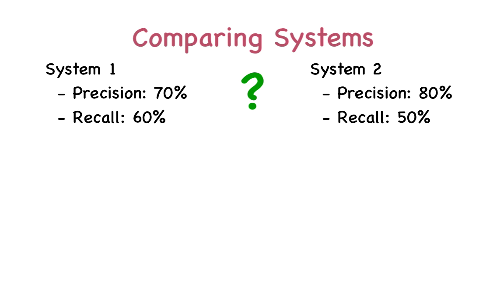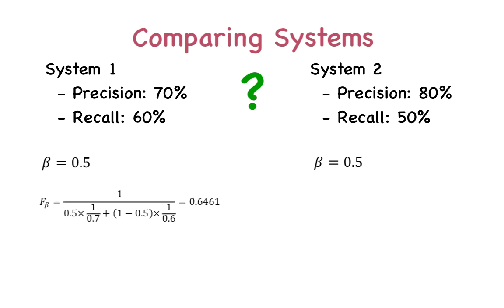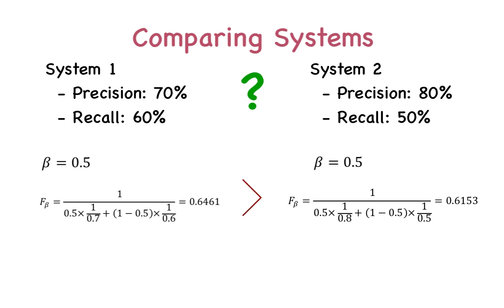Consider the performance of our two systems on the shoe example problem. Since we aren't too concerned with precision, our beta value can be a little low — let's make it 0.5, giving equal weight to both precision and recall. System 1 with 70% precision and 60% recall will have an F-beta measure of 0.6461, or 64.61%. System 2 with 80% precision and 50% recall has an F-beta measure of 0.6153. So System 1 performs better for this low-beta threshold problem. This measure is also known as the F-measure.